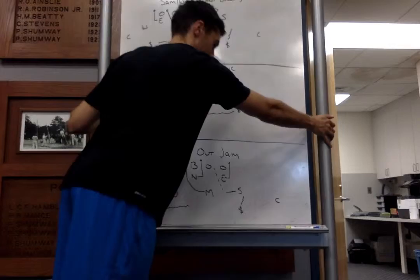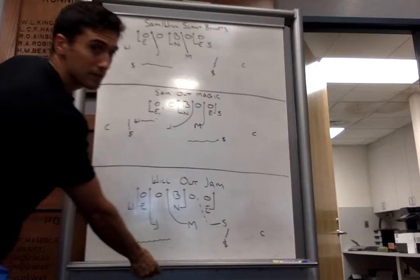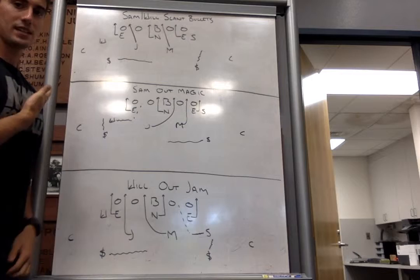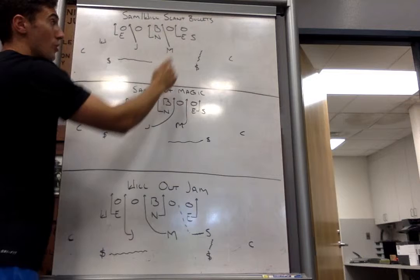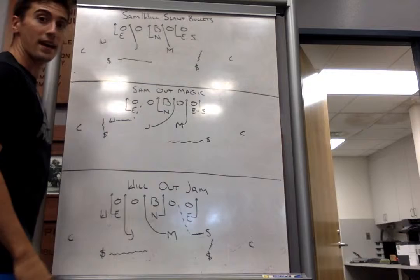We're also bringing in some interior pressures. Alright. Up top, we can do this out of our Sam or our Will blitz. So, here we have Sam, slant, bullets. Sam, slant, bullets. Bullets just stands for inside backers. We're in our Sam front. In, nose in, slanting away from the Sam. In bullets, the Sam does not go. He'll drop into coverage. He'll replace. The Sam will replace the blitzing linebackers and either get the hook and pass or will pick up the back. So, hook in green or pick up the back in gold.